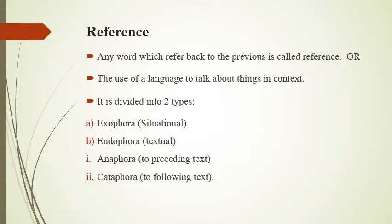Now, reference. Any word which refers back to the previous is called a reference, or we can say the use of language to talk about things in context. Reference is anything that refers back to any other word, situation, or thing already discussed or to be discussed in future text. Reference is divided into two types: exaphora and endaphora. Exaphora refers to any situation which is outside the text — not mentioned in the text — and refers to a situation that happened before, like something that happened yesterday. This kind of reference is known as exaphora.